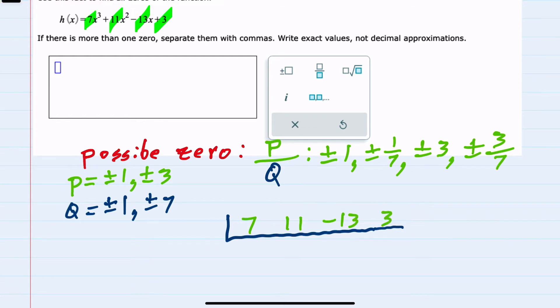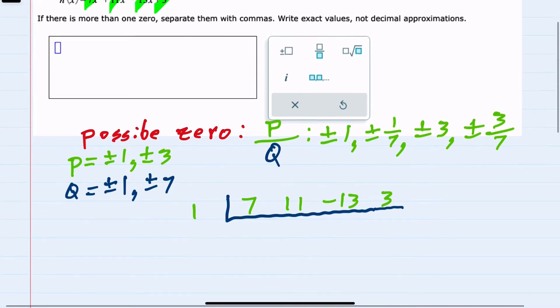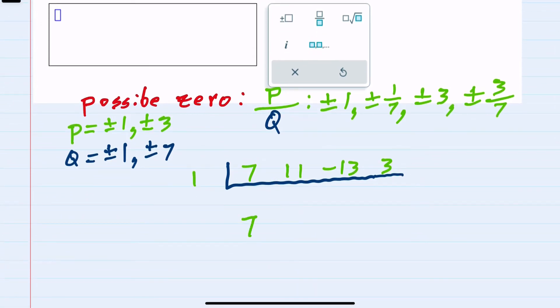And then we would just need to try each one of these to see which one would work. So I'll start with trying a positive one for synthetic division. I would bring down the leading term, multiply one and seven is seven, and add eleven and seven are eighteen.